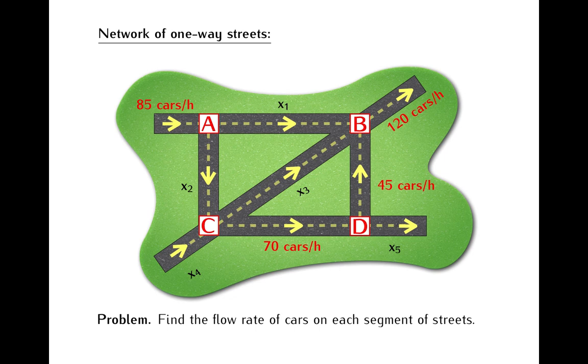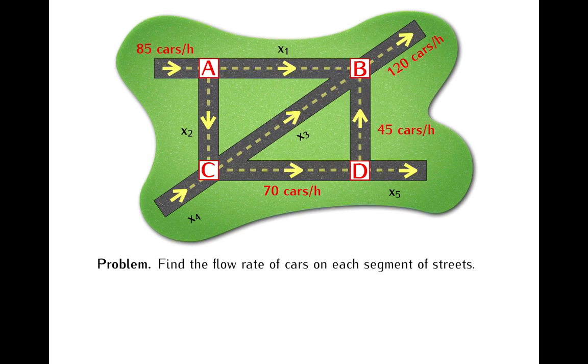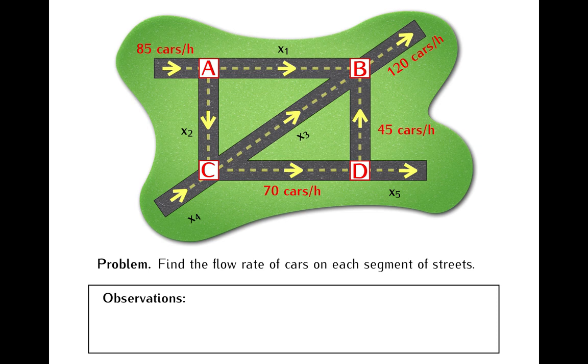Now, our computations will be based on a couple of basic observations concerning traffic flow. The first observation is that the flow of traffic into any intersection is the same as the flow out of that intersection. This is, of course, what usually happens. If, say, 100 cars enter some intersection during one hour, then the same number of cars will exit that intersection during that hour.